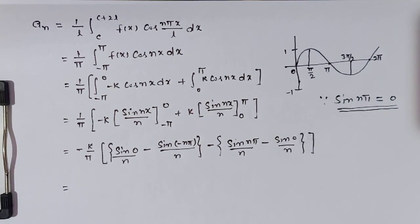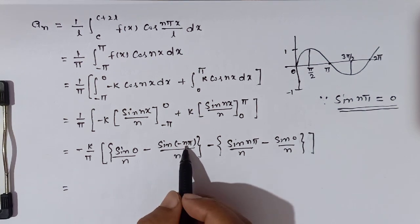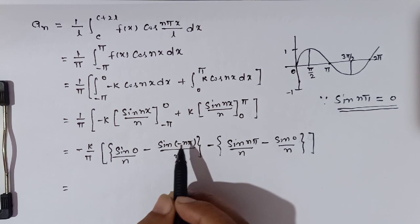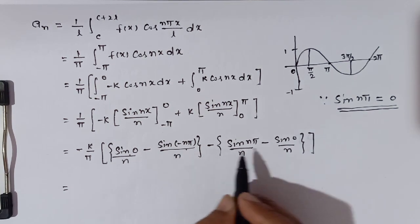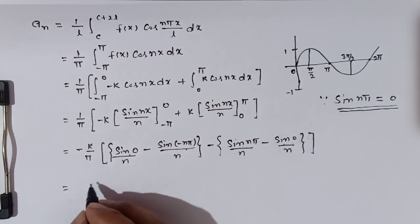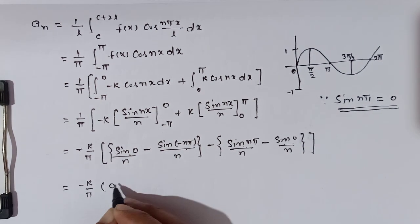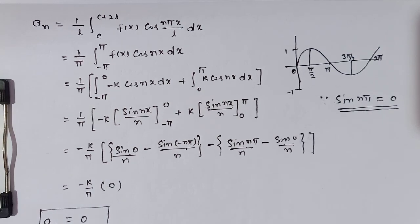So sin(0) = 0, sin(nπ) = 0, sin(nπ) = 0, sin(0) = 0. When we solve further, everything becomes 0. This means aₙ is also equal to 0.